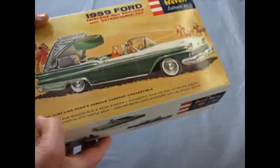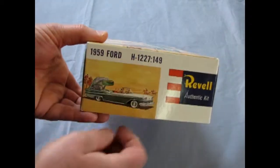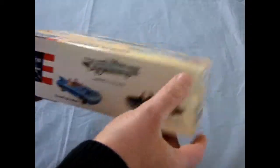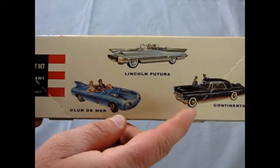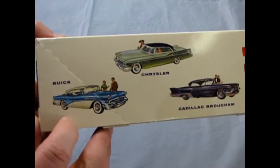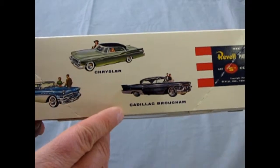However, it is a cool looking old box with great artwork. It's even got the old part number on there and shows some of the other cars in the series. The Club de Mer, the Lincoln Futura, the Lincoln Continental. And on this side, the 57 Buick, the Chrysler and the Cadillac Brougham.